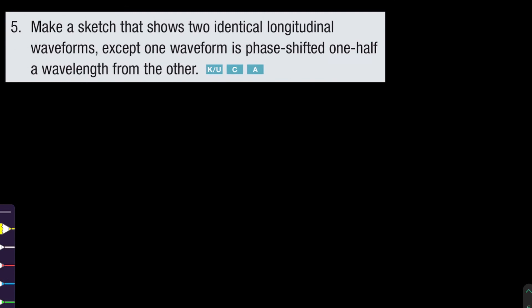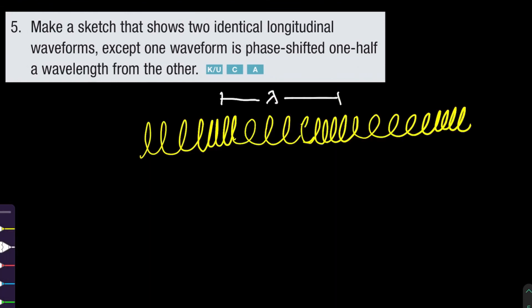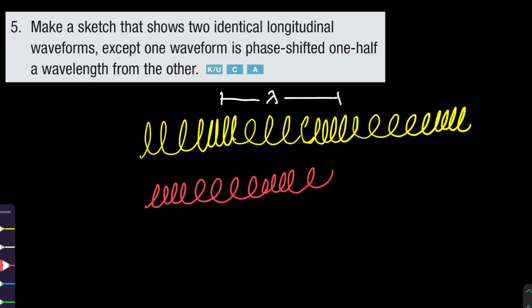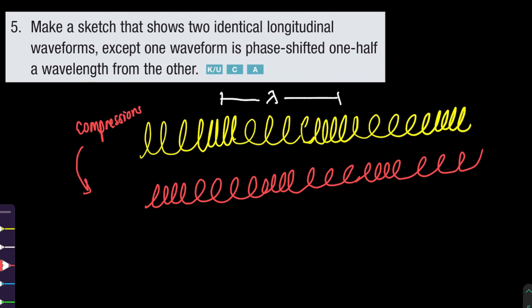Question five: make a sketch showing two identical longitudinal waveforms where one is phase-shifted one half wavelength from the other — same idea as above. This is a full wave cycle, so shifting half to the right means the compressions in the original wave now occur where the rarefactions are in the second wave, and the rarefactions in the original are now where the compressions are in the second wave.